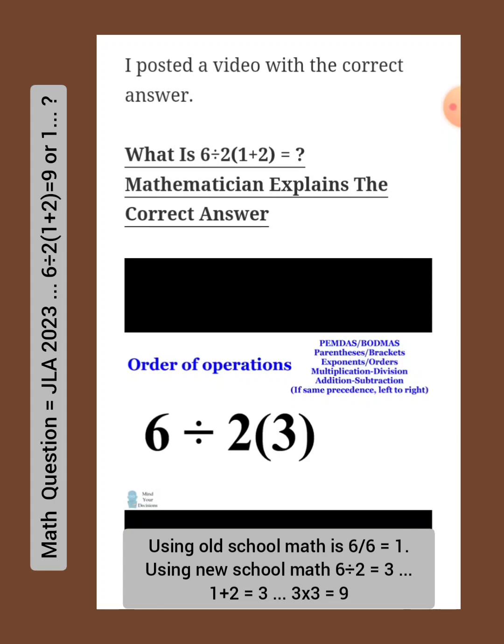Now the question is what to do next. If you input this into Google, Wolfram Alpha, or pretty much any scientific calculator, all of these will interpret the parentheses as an implicit multiplication. So this 2 parentheses 3 will be converted into 2 times 3.